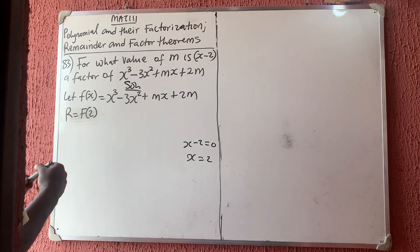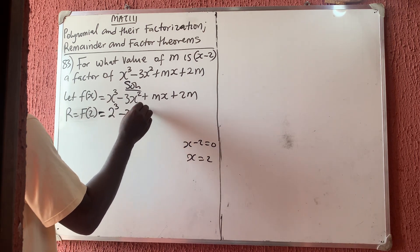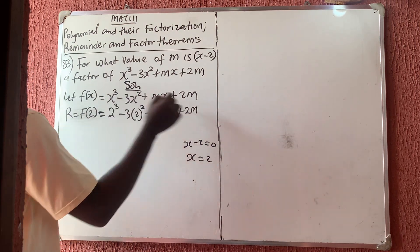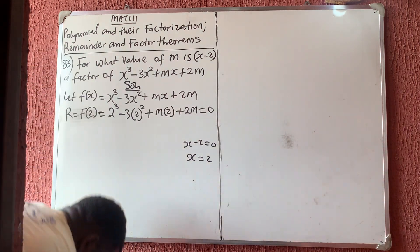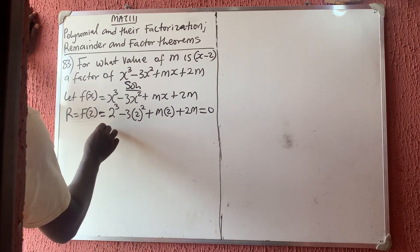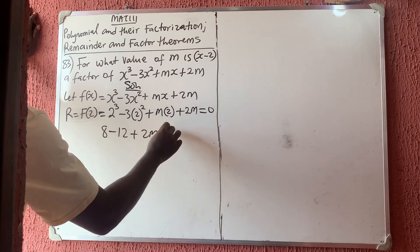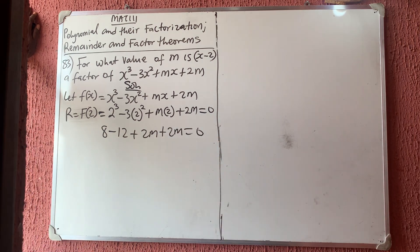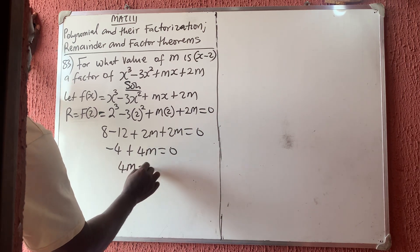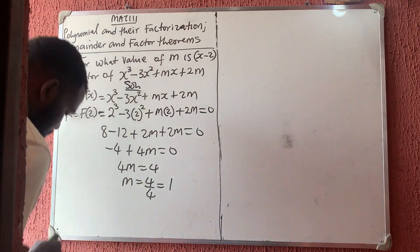Anywhere we see x we put 2, so we have: 2 cubed minus 3 times 2 squared plus m times 2 plus 2m equals zero — zero because it is a factor. That gives us 8 minus 12 plus 2m plus 2m equals zero, so minus 4 plus 4m equals zero, therefore 4m equals 4, and m equals 1.